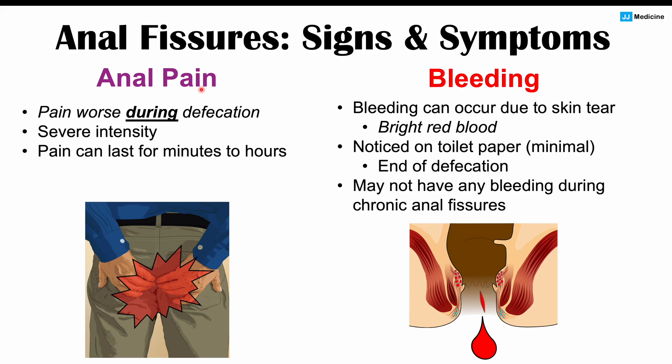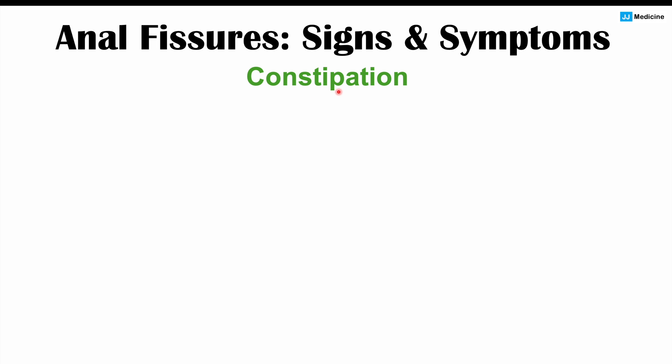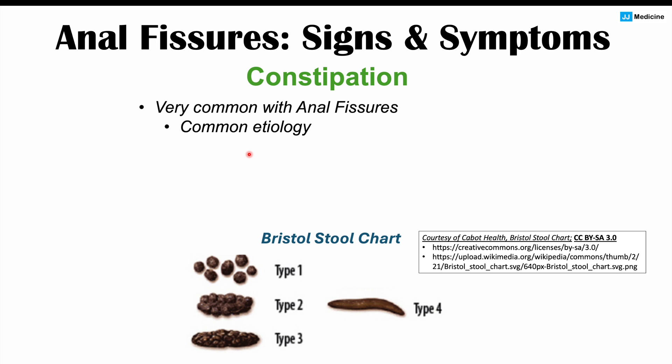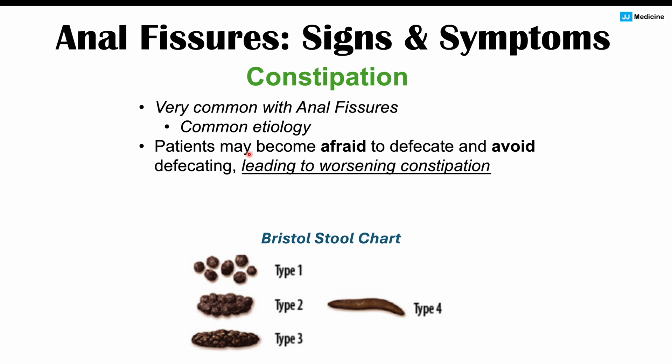Another important symptom associated with anal fissures is constipation — though it is not directly caused by the fissure itself. Due to the severe anal pain, patients can become afraid to have bowel movements and avoid them altogether. This leads to worsening constipation, and when they do finally have a bowel movement, it can cause further tearing and worsen the fissure. So constipation can be either a cause of anal fissures or a consequence of the pain.